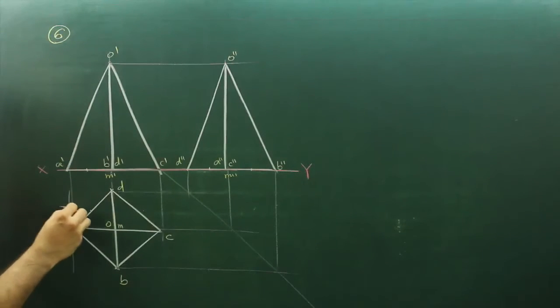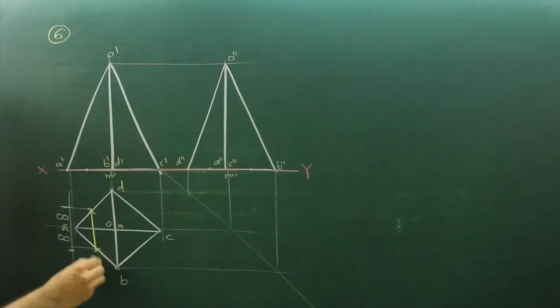So I will draw a line, I will take 8 and 8 on both sides and I will extend wherever it will cut that will be 2 points that is PU, PV.